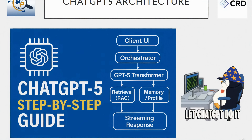Here's the big picture. ChatGPT-5 is more than just a single model — it's a complete system. When you type a question, it doesn't just magically answer. Behind the scenes, there are layers of components working together: input processing to understand text, images, or audio; safety checks to make sure the interaction is safe and respectful; retrieval and memory systems that fetch facts and remember useful context; the GPT-5 brain, which generates the response; and finally, streaming output, so you see the answer in real time.